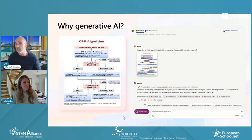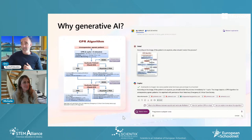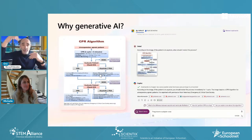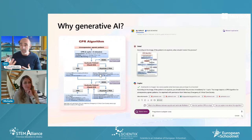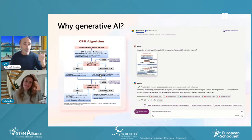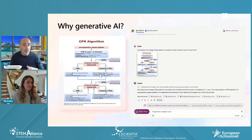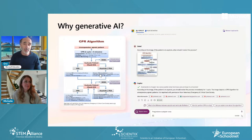A 20-second demo expresses what generative AI brings to the world. In Copilot, without any prior context, an image of a CPR algorithm — with boxes and arrows found on the internet — was pasted in. The question asked was: 'According to the image, if the patient is in asystole, when should I restart the process?' The model was not trained on it, not told what the process was. Copilot answered: 'If the patient is in asystole, you should restart the process immediately for one cycle.' It understood not only the text in the image but also the context — the arrows, the process flow. That is why generative AI is so powerful: it creates brand new information from context. From the web with Copilot, from your own data with Copilot for M365, and in classrooms with Learning Accelerators and Reading Coach.